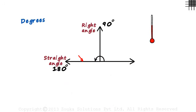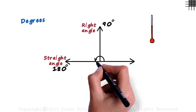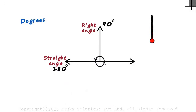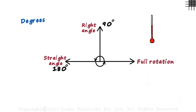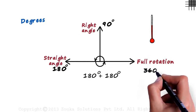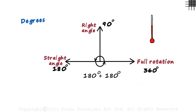And when this arm rotates and overlaps the initial arm, it is called one full rotation, which equals 180 plus 180 — 360 degrees.